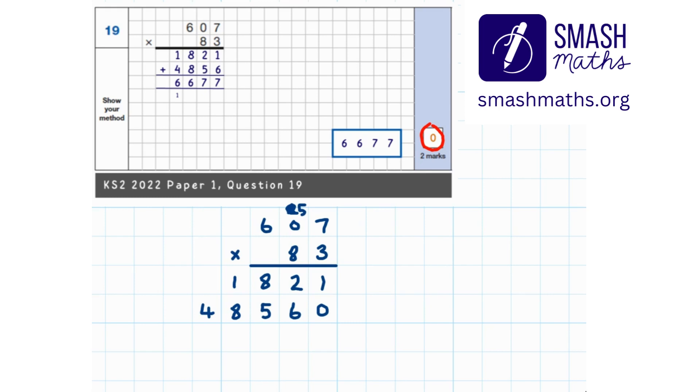So 1 add 0 is 1. 2 tens add 6 tens is 8 tens. 800 add 500 is 1300, which is 300 and 1000.